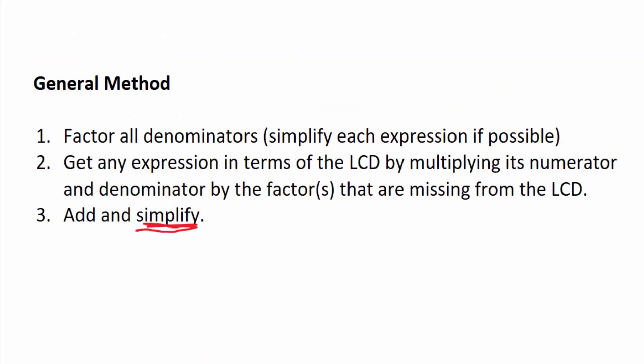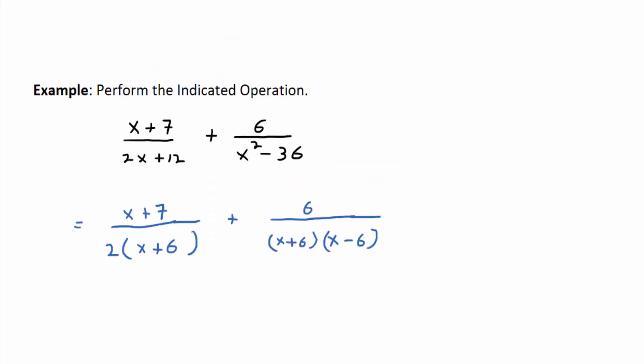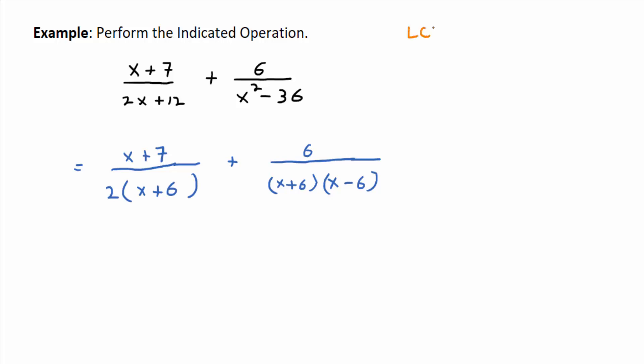Step one says factor all denominators. Step two, get everything in terms of the LCD. So how do we do that? What is the LCD? It's got to contain a factor of 2, a factor of x plus 6—just look at each and every factor from left to right. It's got to contain a factor of x minus 6. And then you form the LCD by taking the product of those factors, and the LCD should be the smallest degree polynomial that contains all the factors of both denominators.